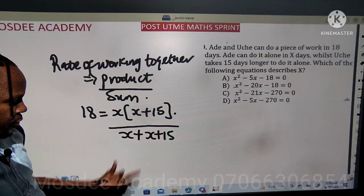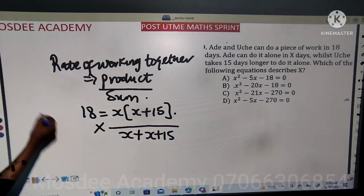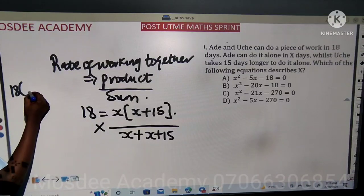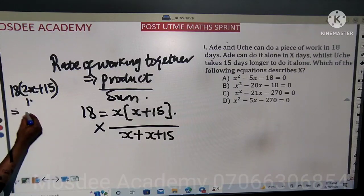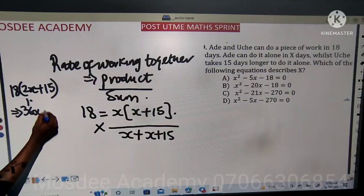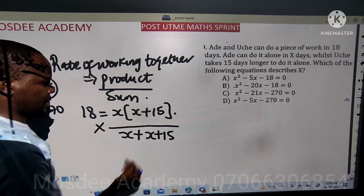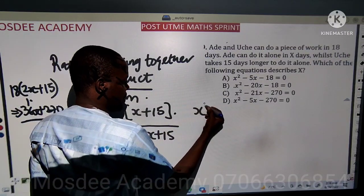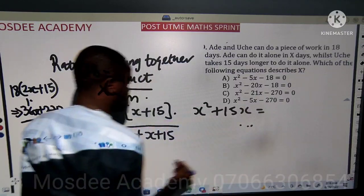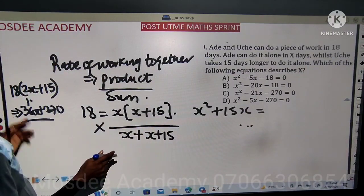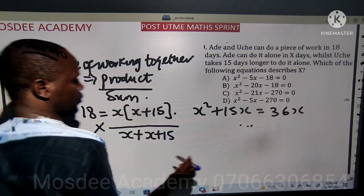So we can see x plus x is 2x, giving 2x plus 15. So 18 times open bracket 2x plus 15. That gives 36x, and 18 times 15 is 270. So that is directly equal to x times x, which is x squared. x times 15 plus 15x, which is equal to 36x plus 270.